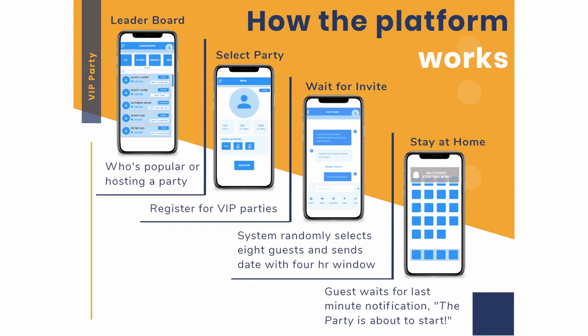First, you look at the leaderboard to find VIPs you would like to join in a party. Then you view the parties that VIP has scheduled and register. Once registered, you wait for the notification to find out if you've been invited. Finally, if you have been invited, you are given a four-hour window to wait for a notification stating when the party starts. All of these steps have to be performed while at home.